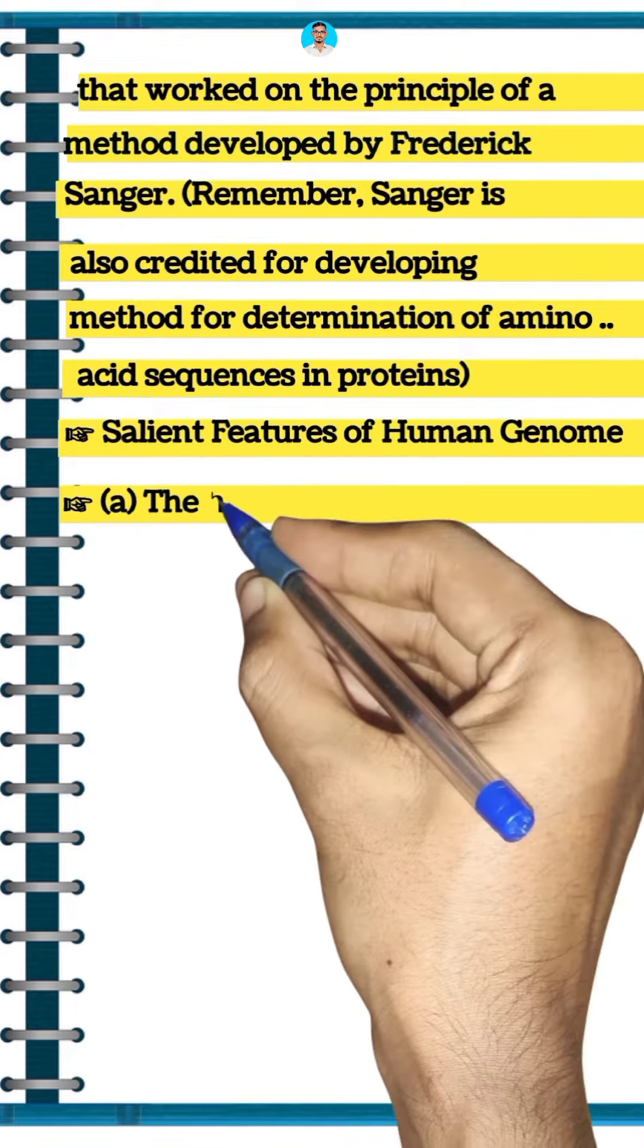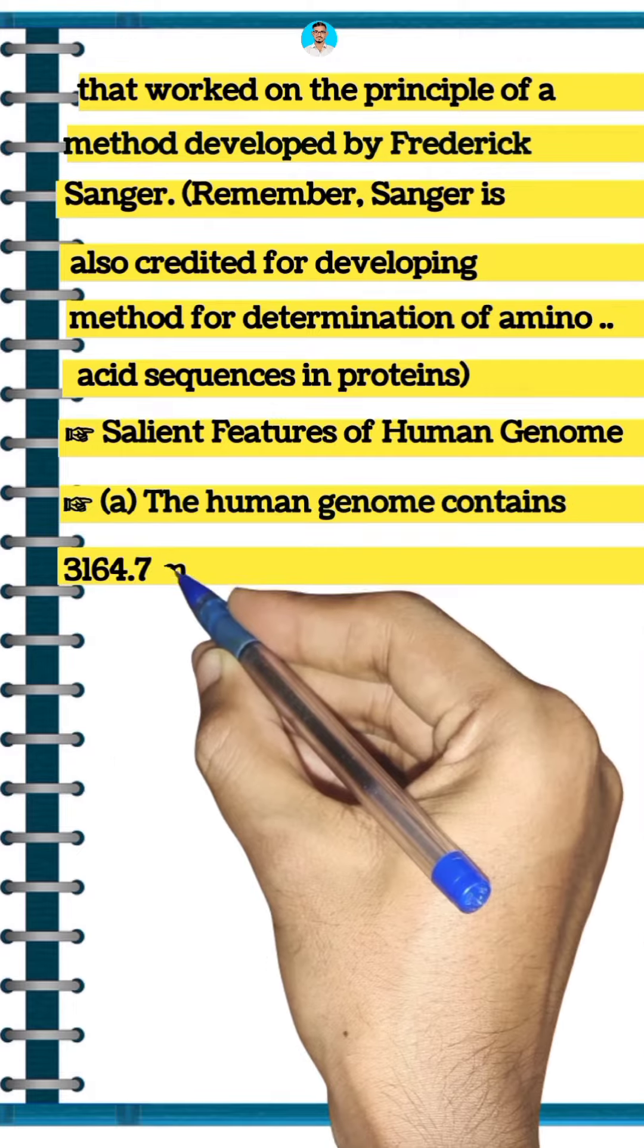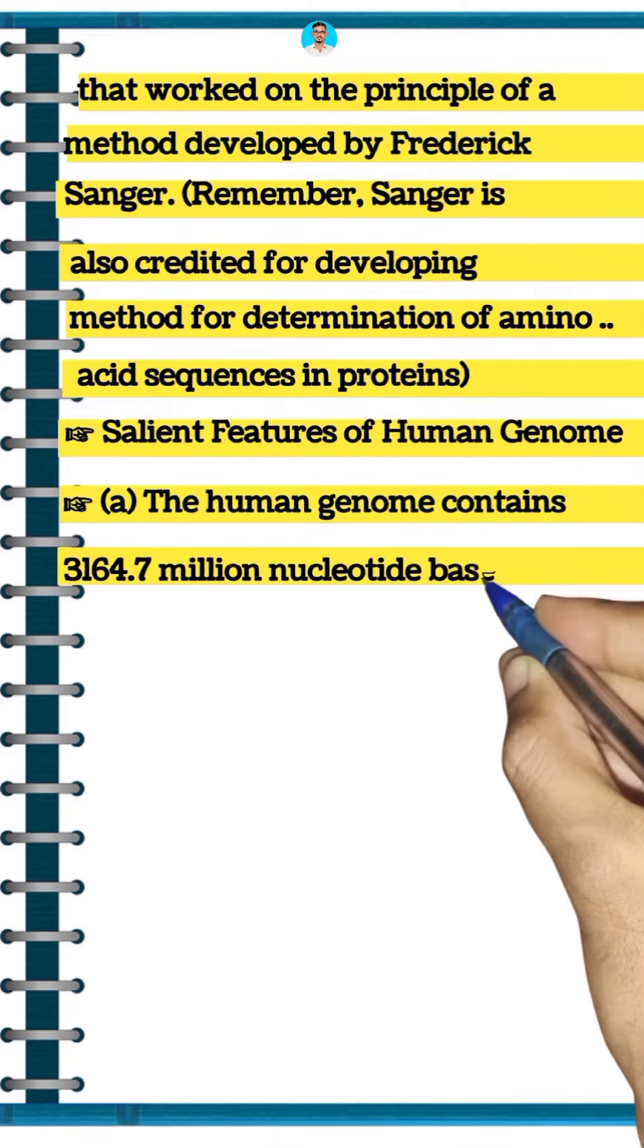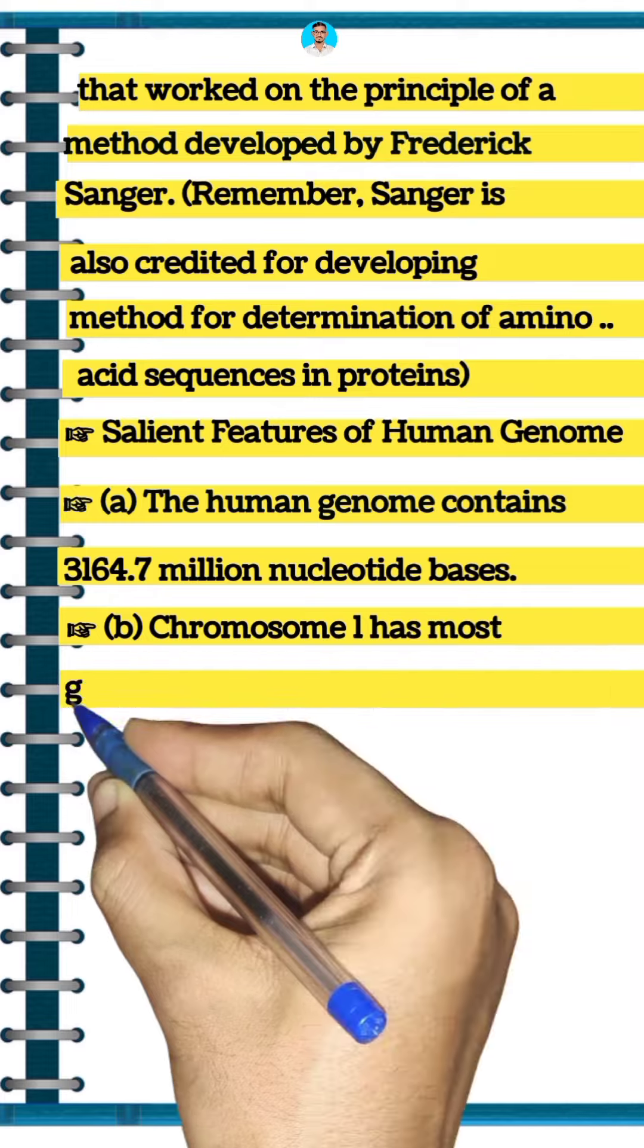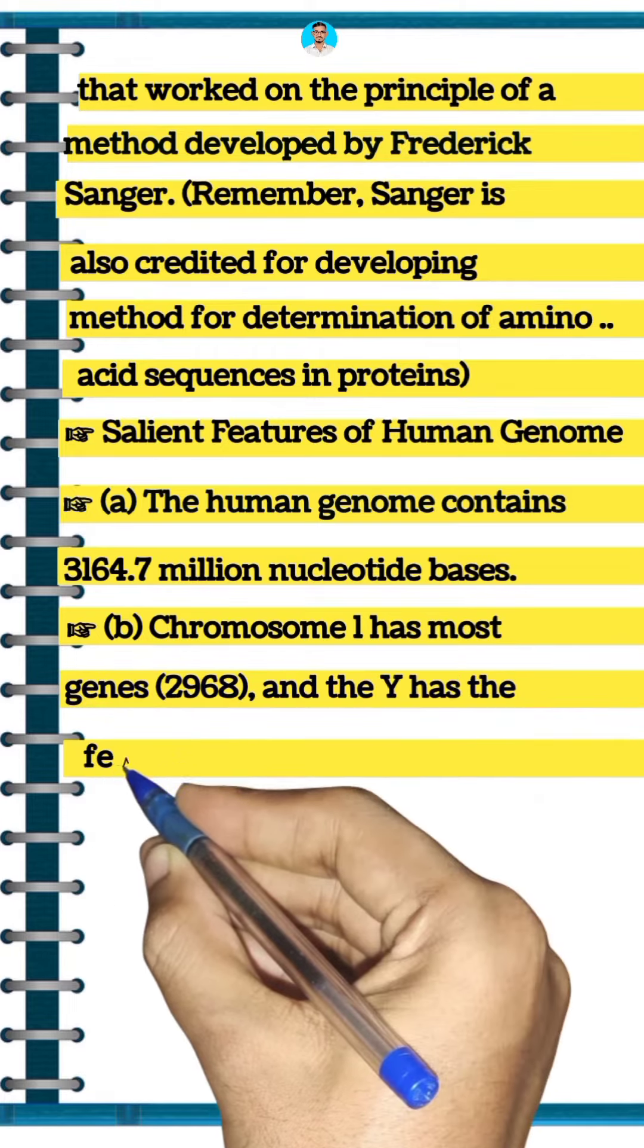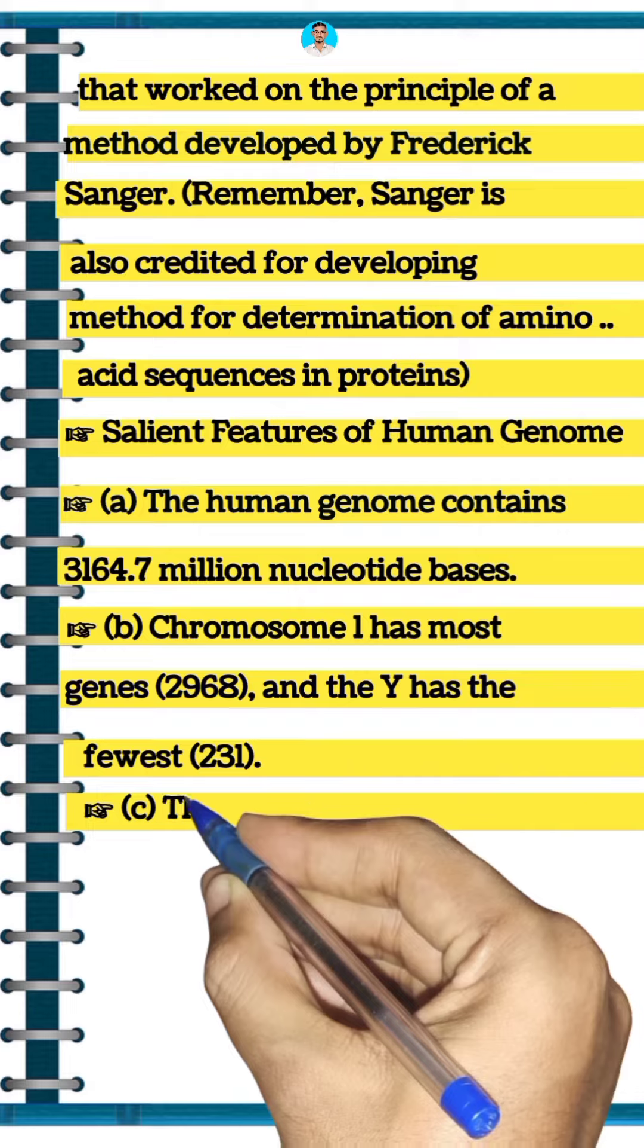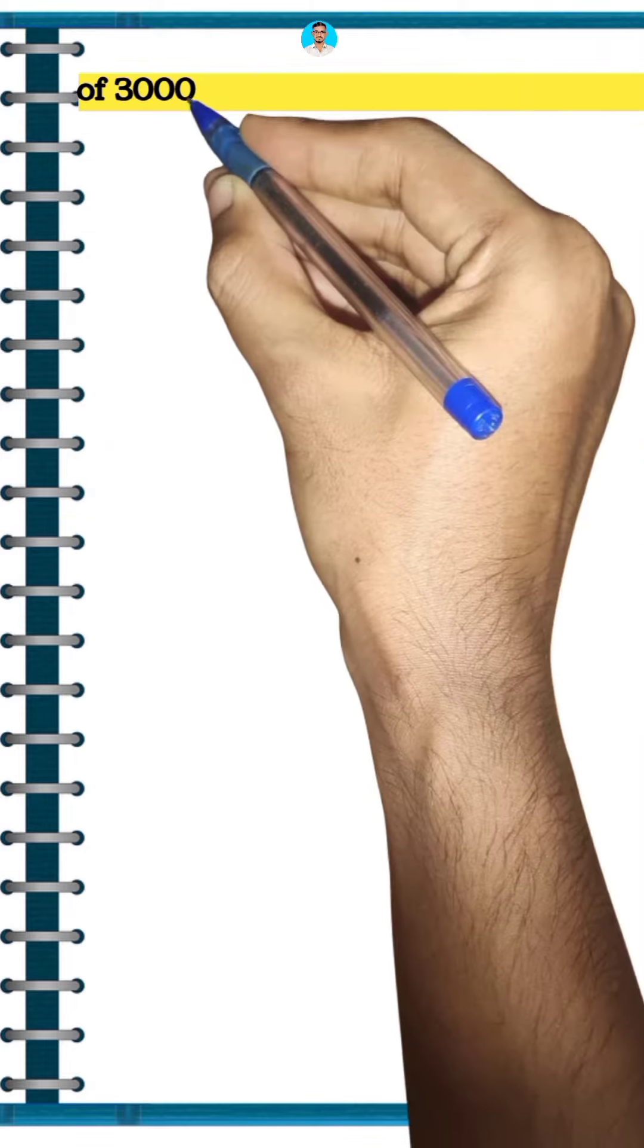Salient Features of Human Genome: The Human Genome contains 3,164.7 million nucleotide bases. Chromosome 1 has the most genes (2,968), and the Y has the fewest (231). The average gene consists of 3,000 bases, but size varies greatly with the largest known human gene being dystrophin at 2.4 million bases.